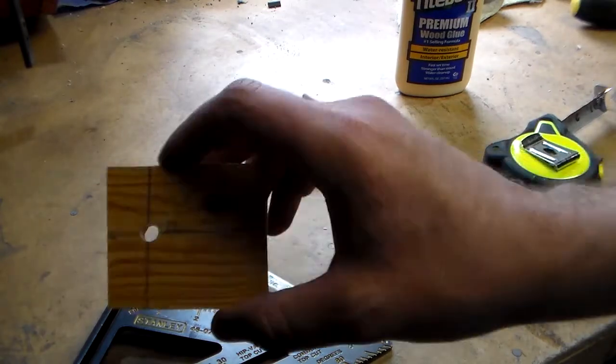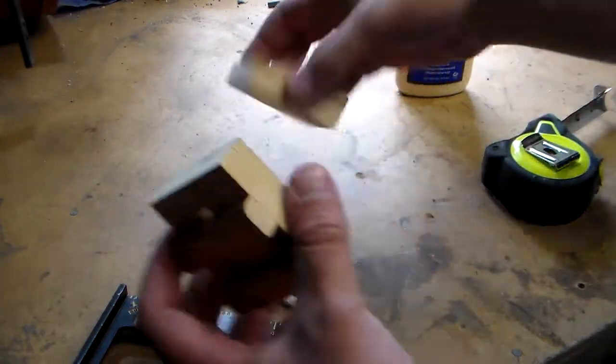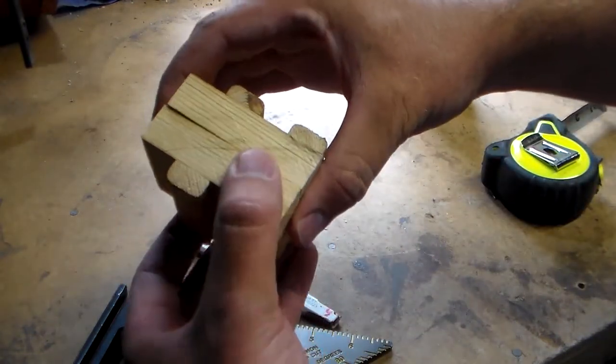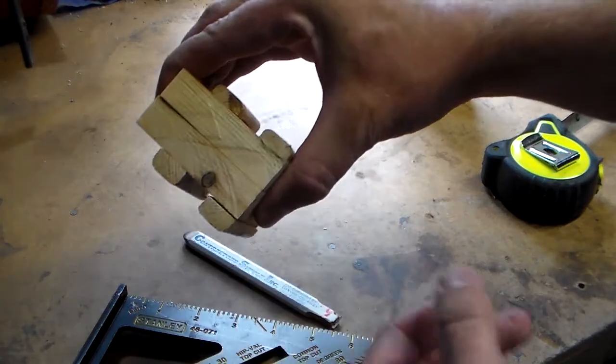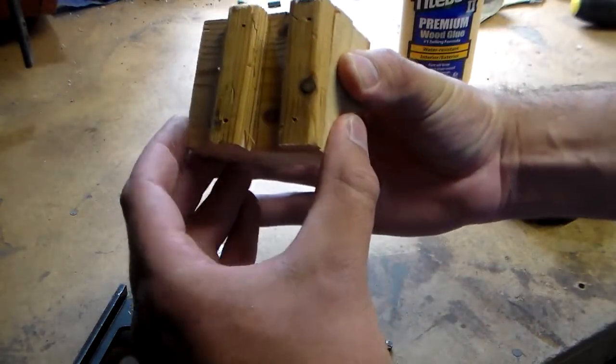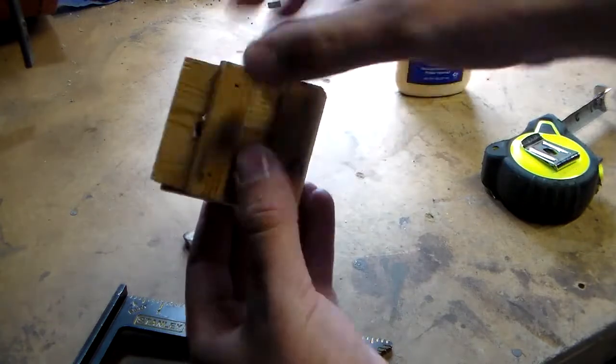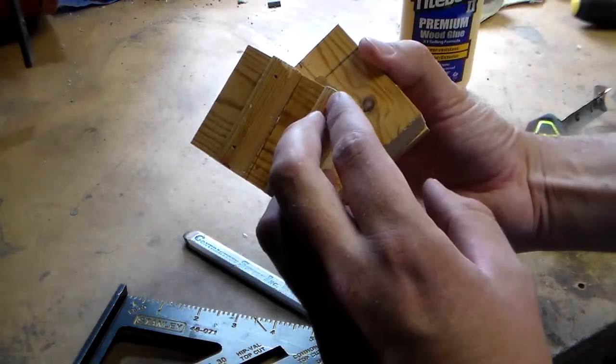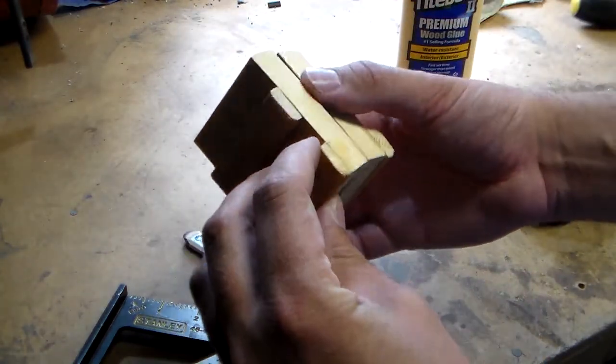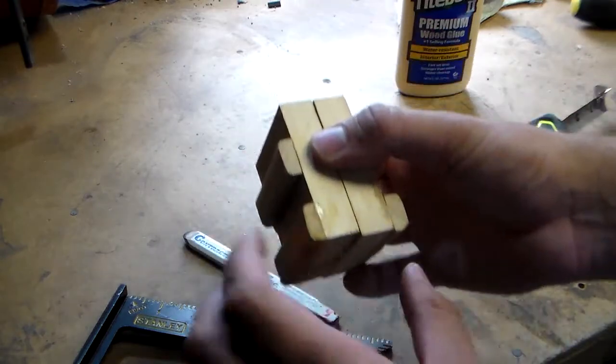Alright, now that I've got my first hole drilled, what I'm going to do is I'm going to clamp these two together, so that when I drill through my original hole, it'll meet up on my second piece of wood. You could also just measure and drill this. It's not going to matter a whole lot, this is just a little easier for me.